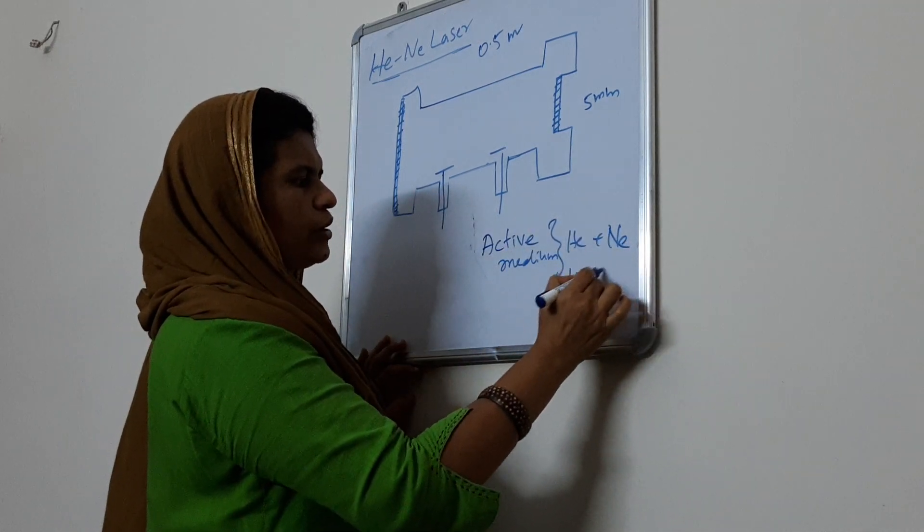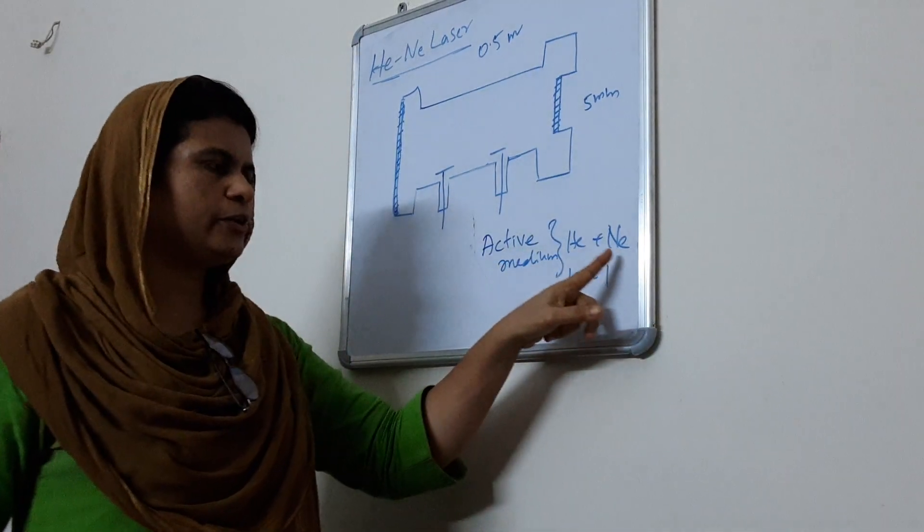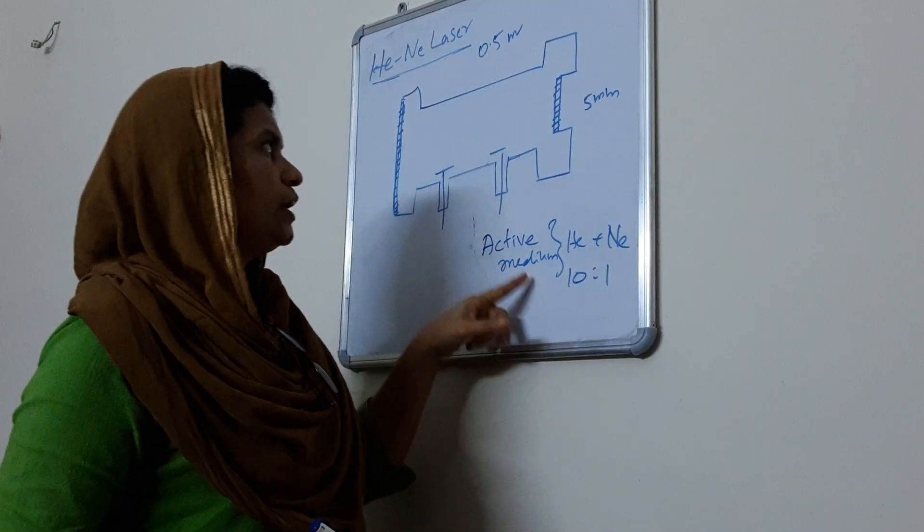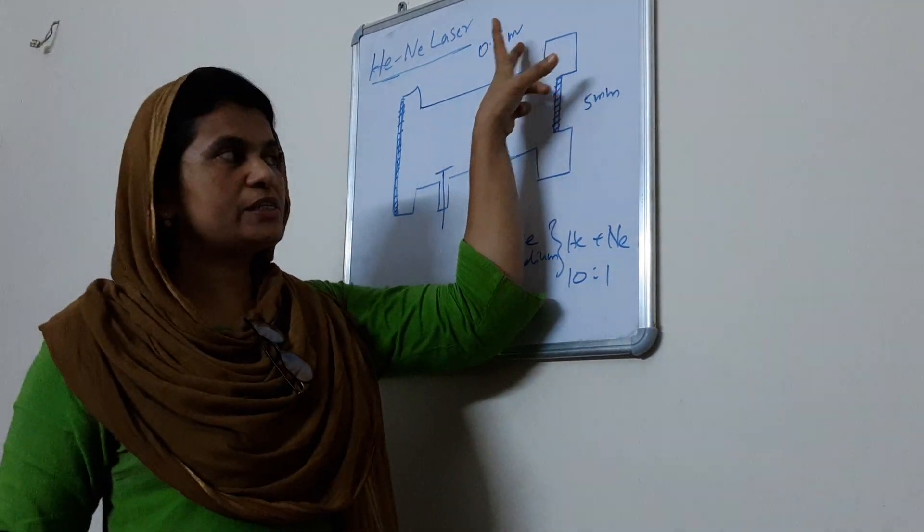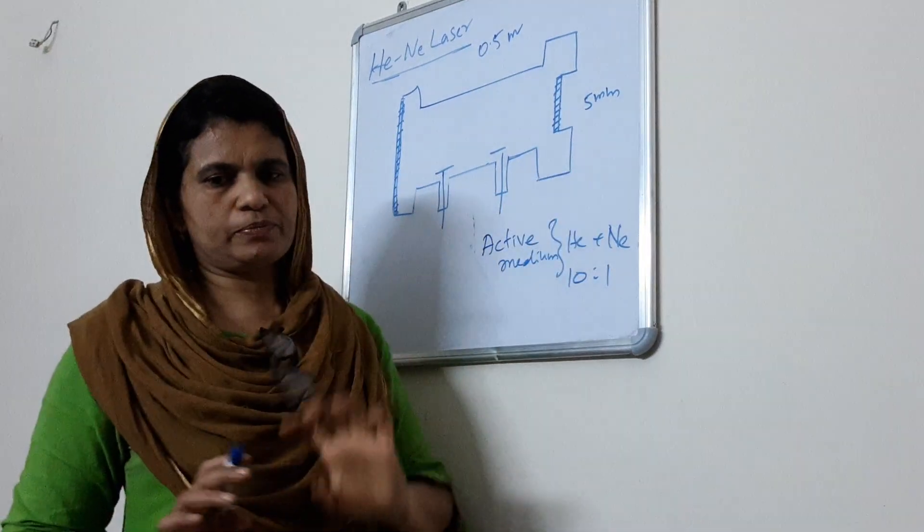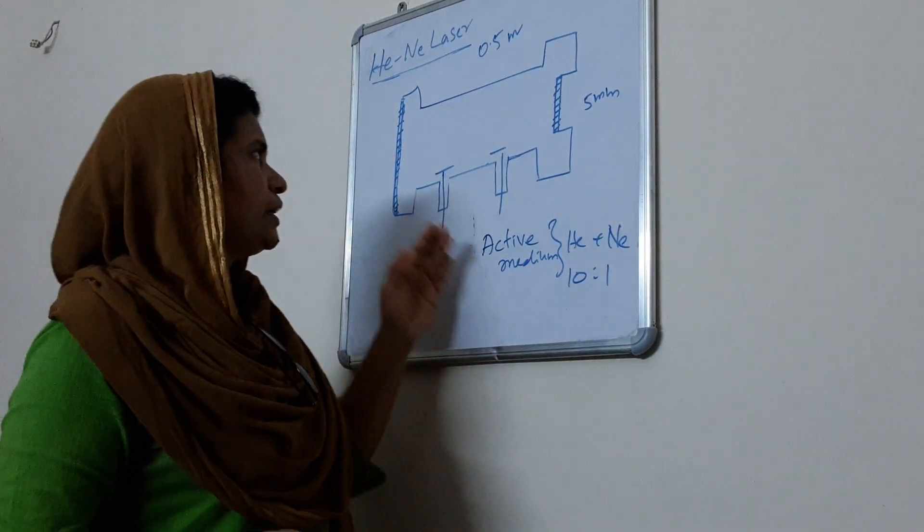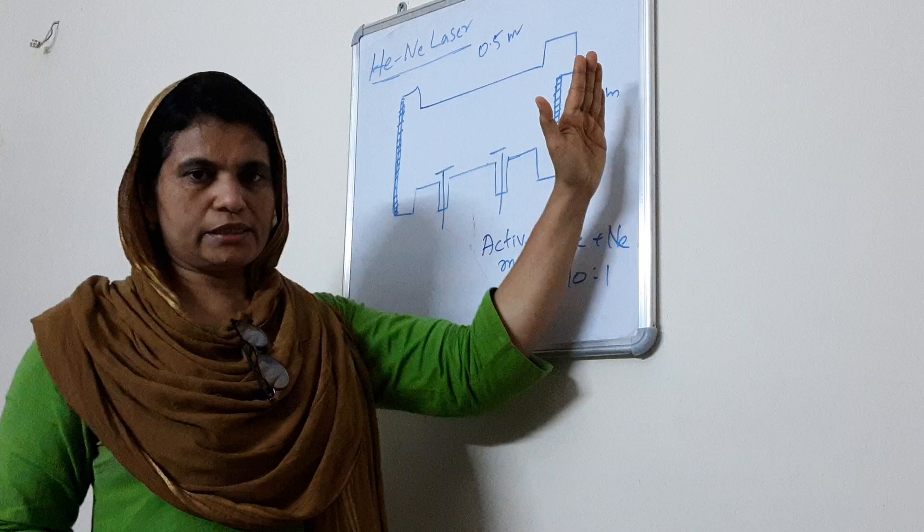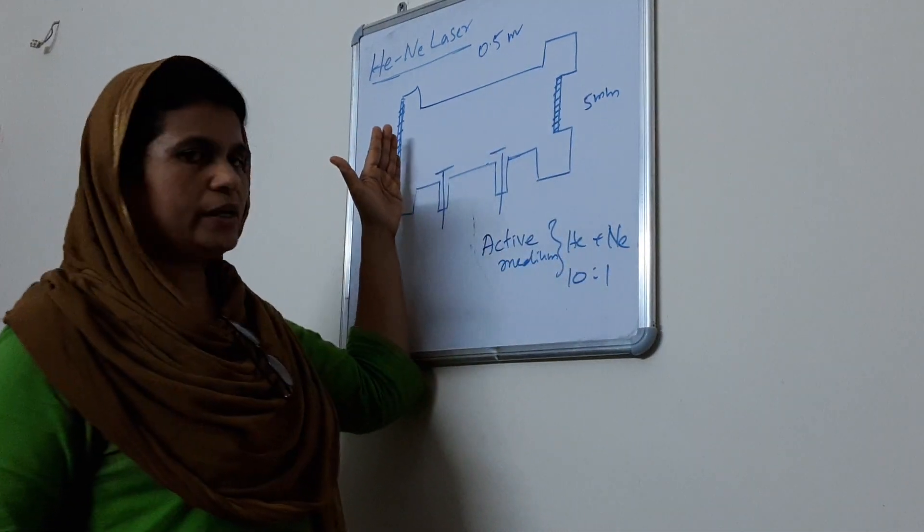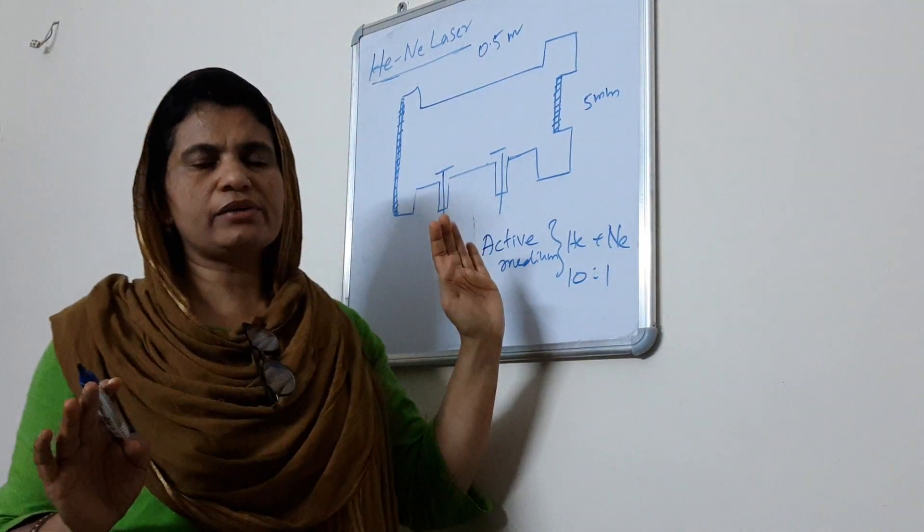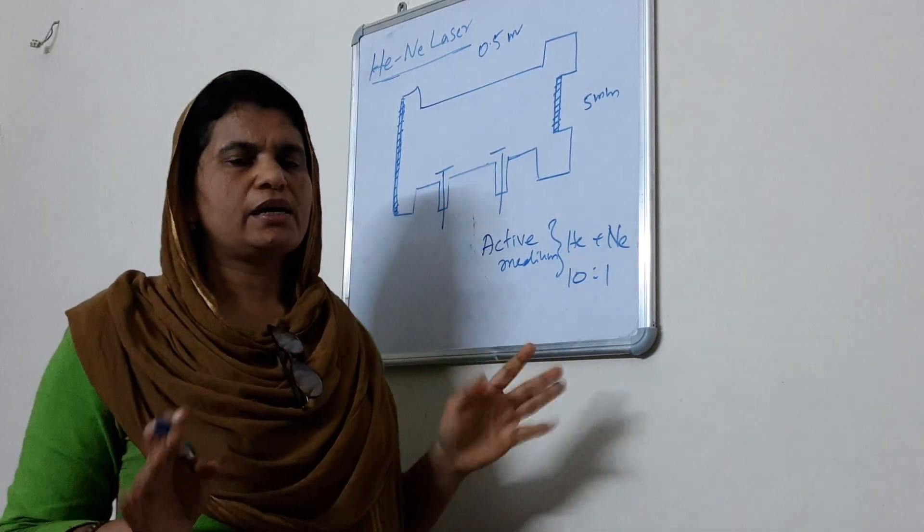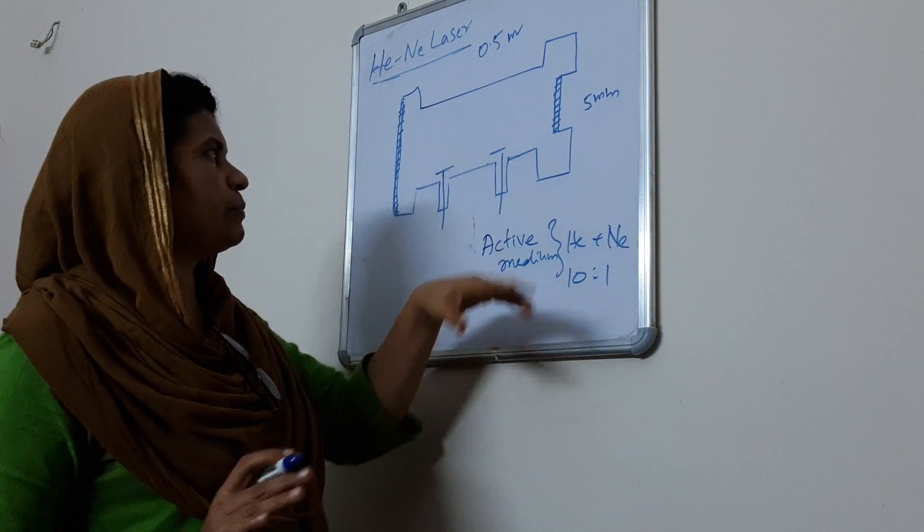In the ratio 10 is to 1. In this proportion, we have a mixture of Neon laser. The tube is almost of length half meter and breadth five millimeter. Two mirrors, one is fully not transparent, completely reflecting.